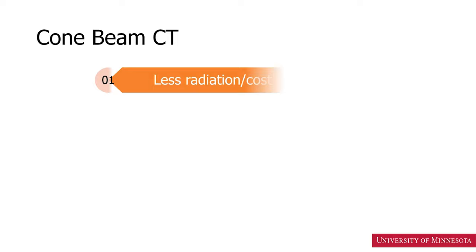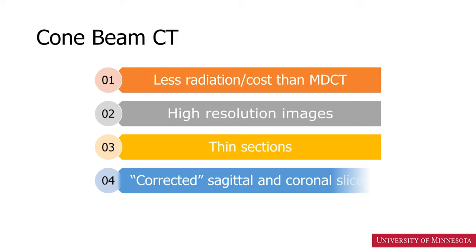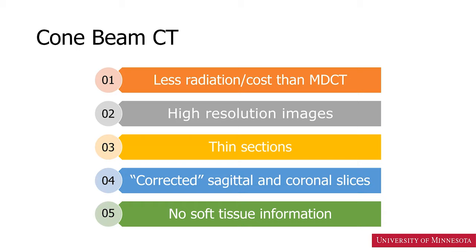Let's start with cone beam CTs. CBCT has less radiation and less cost than a medical CT. It has high resolution images and provides thin sections in millimeters or fractions of millimeters. It can provide corrected sagittal and coronal slices. The limitation of a CBCT scan is that there is no soft tissue information.